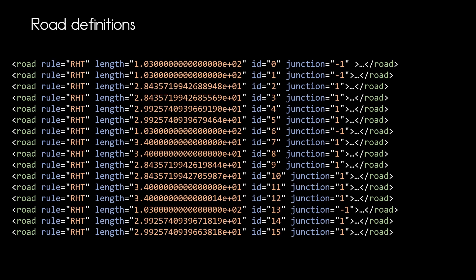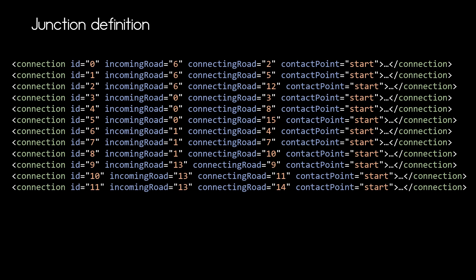This is stated by the junction attribute and if it is set to 1 or minus 1. Under our road definitions we now start with the junction definition as we saw in the high level XML overview. Within the junction element we find all our connection elements.